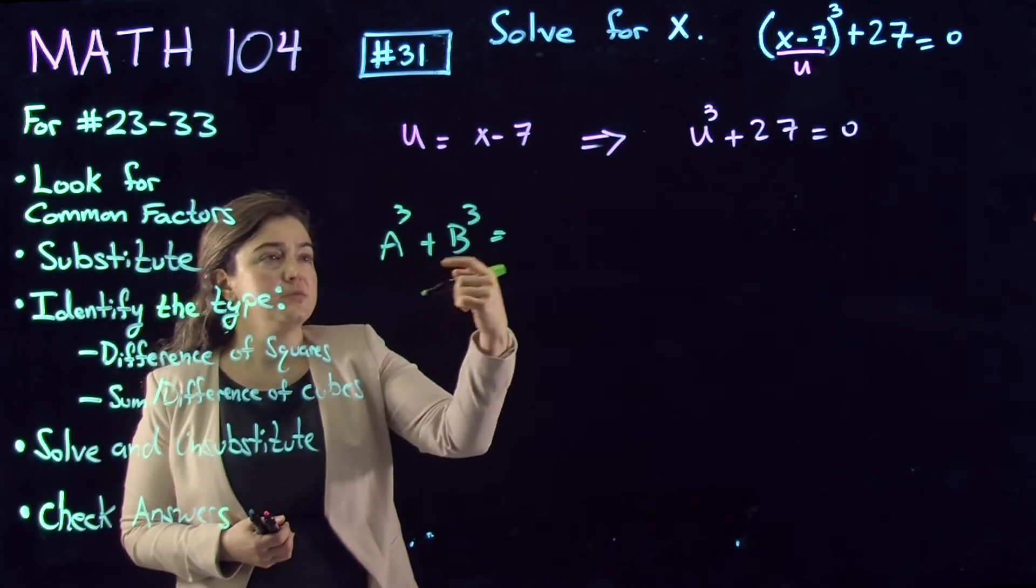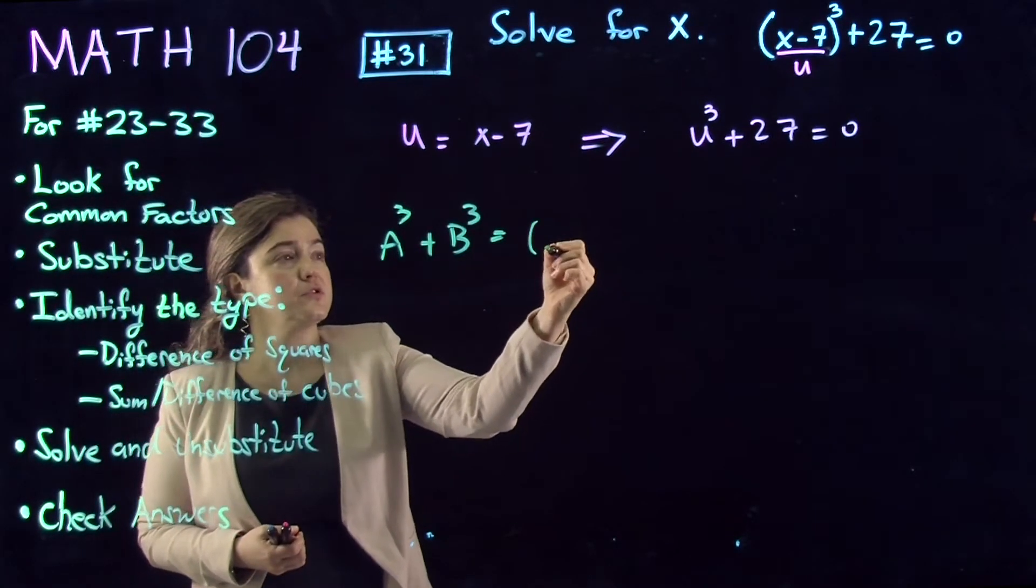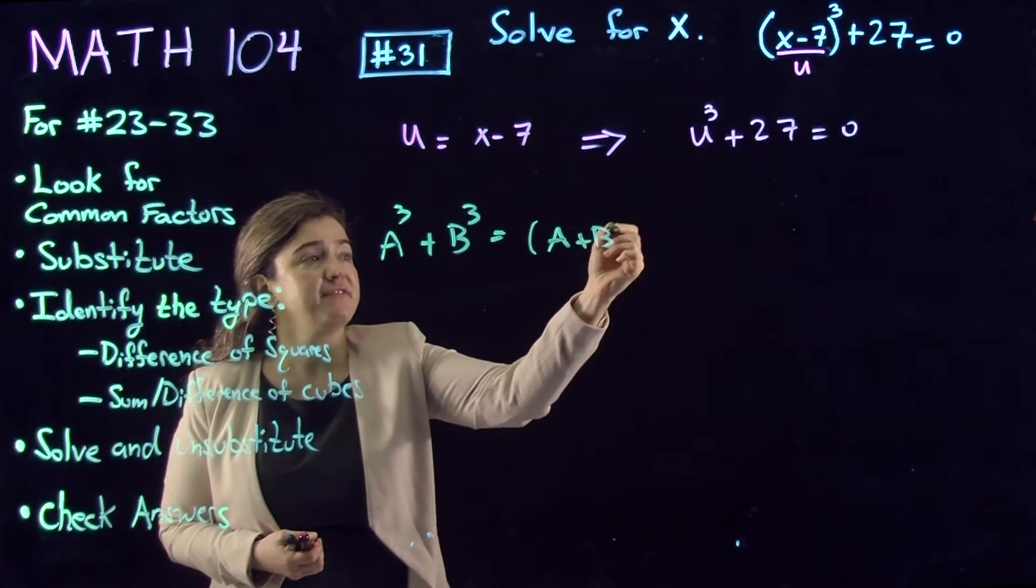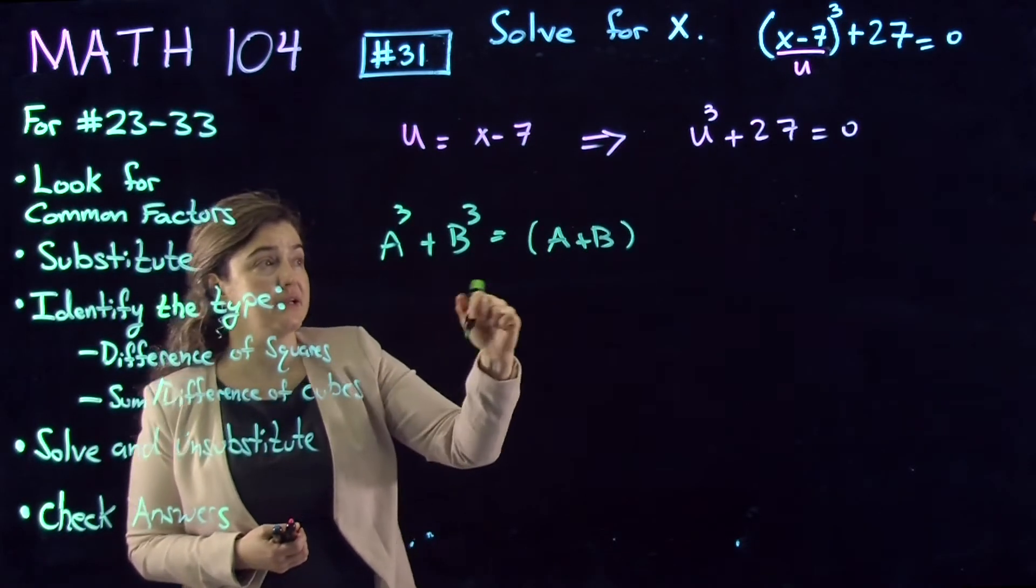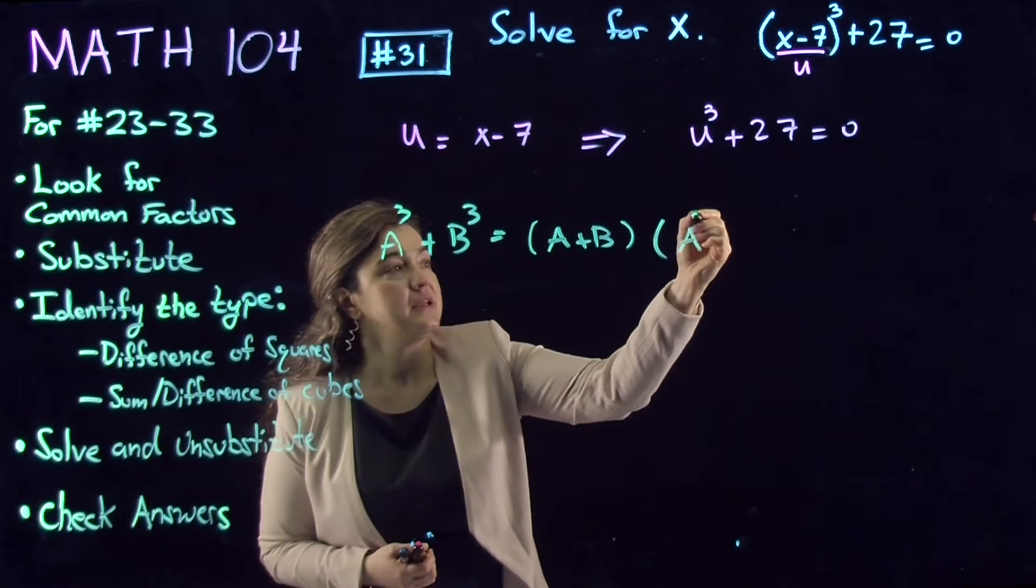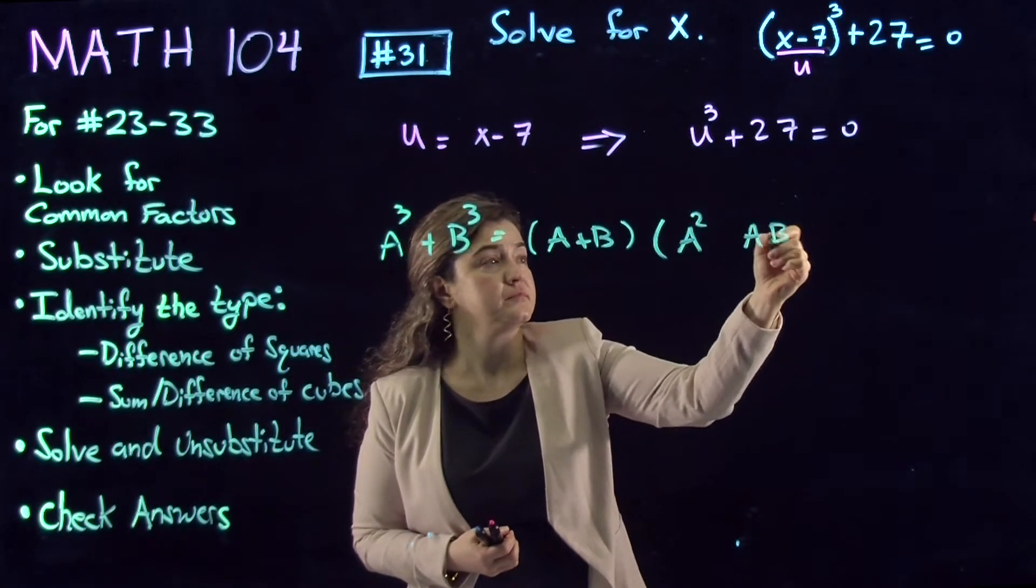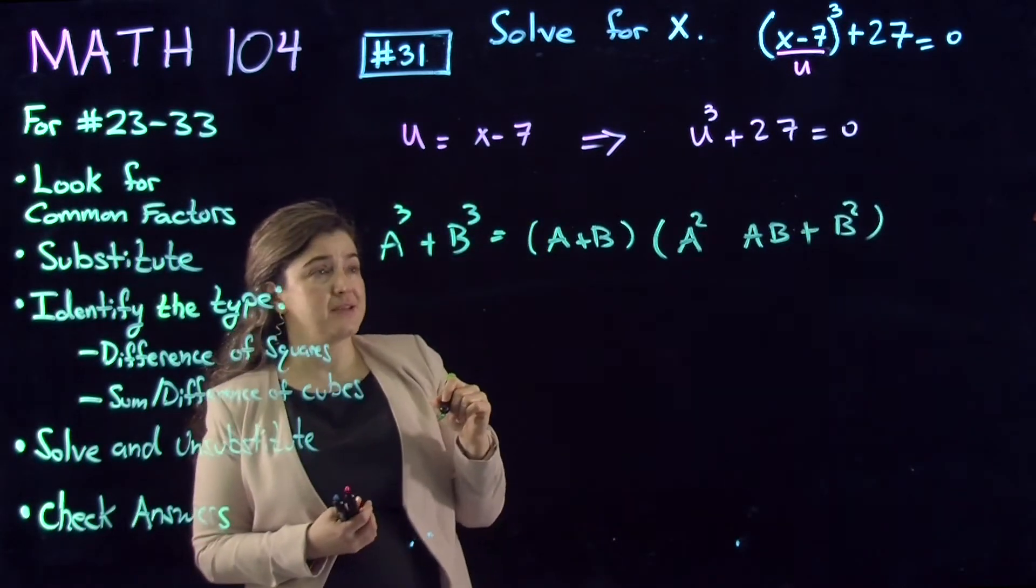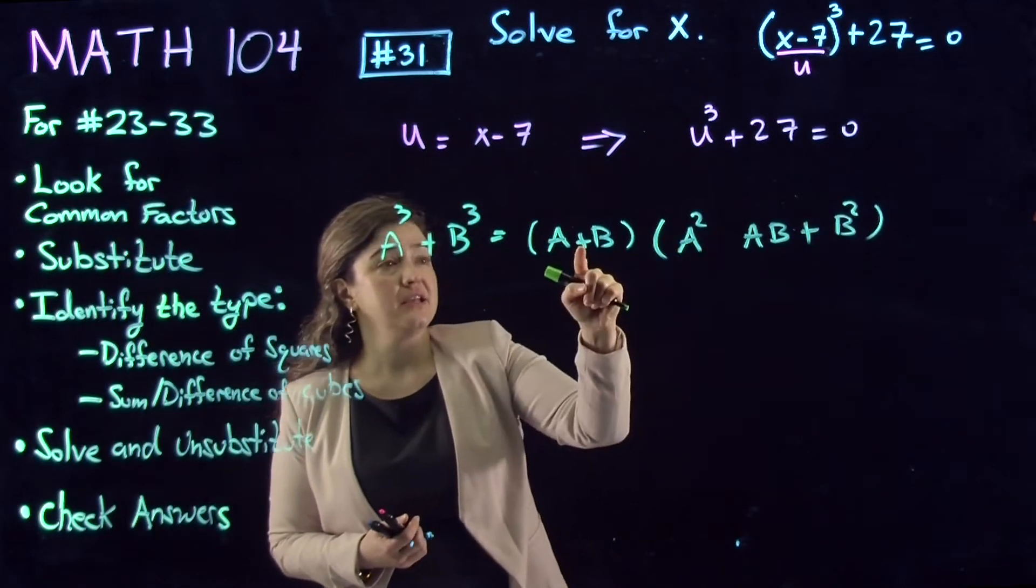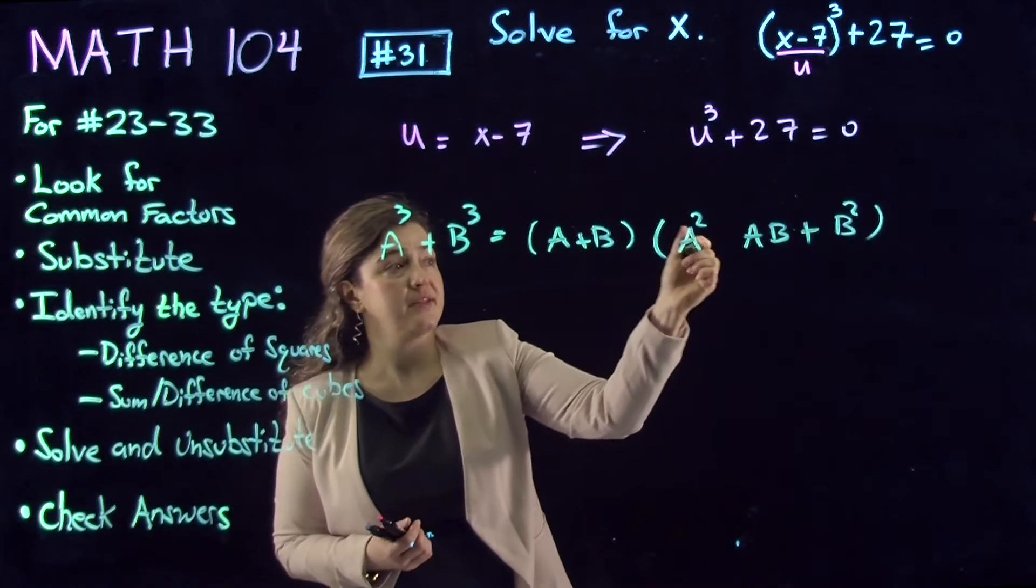a³ + b³ is equal to the first factor. This sign follows this sign. Then the second factor. This sign is always positive, and this sign is the opposite of that one.